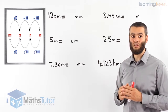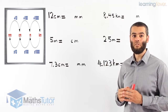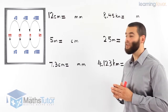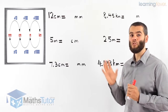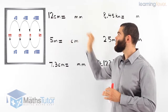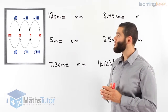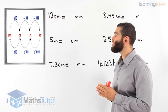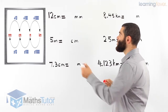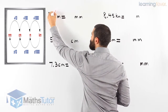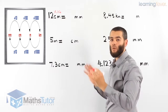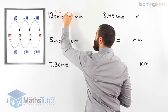Now that we've understood the process, let's do some practical examples. Here, we're asked to convert from a larger unit to a smaller one. In this case, we're asked to go from 12 centimetres to millimetres. We look at our diagram — from centimetres to millimetres, we times by 10. So 12 times 10 equals 120.